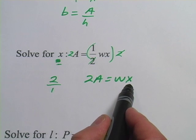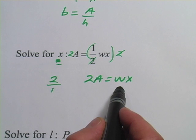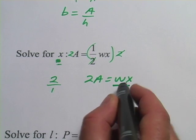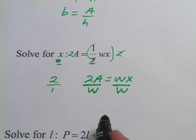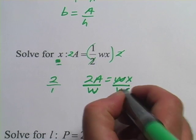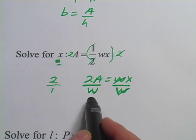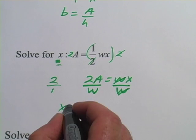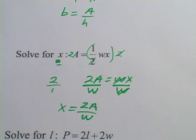Now we're trying to get X alone. What's being done to it now is that it's being multiplied by W. So I want to do the opposite of that. I want to divide by W. I have to do it to both sides. On this side, the W's will cancel, leaving X alone. And I get X equals 2A over W. And I could rewrite that from left to right if I wanted to. X equals 2A over W.